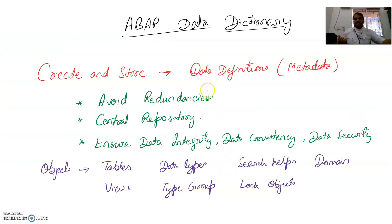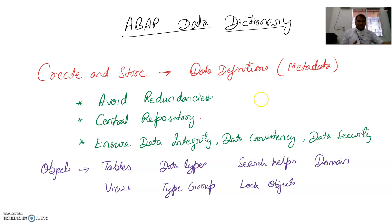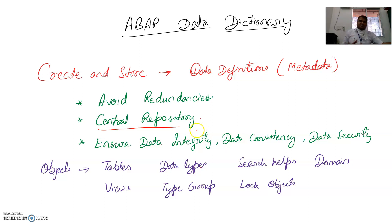The ABAP Data Dictionary creates and stores data definitions, also called metadata. All the data from the database is taken as a required set and stored in the underlying database. The purpose is that it acts as a central repository — like a college's central database used by all departments. If a student changes their address in one place, it reflects everywhere. That is the advantage of a central repository.